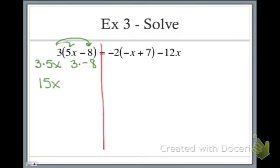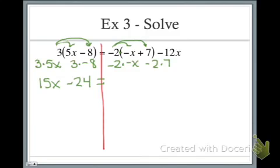So 3 times 5x is 15x, and 3 times negative 8 is negative 24. On the right-hand side we're going to do the same thing. I can't combine inside of the parenthesis negative x and positive 7, and there is no outside power, so we multiply that negative 2 to both the negative x and the positive 7. Notice that after the 7 the parenthesis closes, so the negative 2 does not get multiplied to the negative 12x. So negative 2 times negative x is positive 2x, negative 2 times 7 is negative 14, and that negative 12x just carries down untouched.